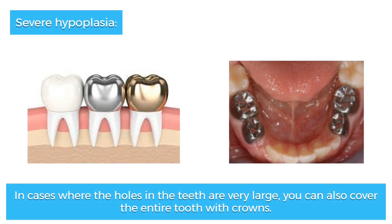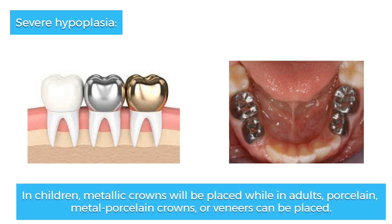For severe hypoplasia, in cases where the holes in the teeth are very large, you can cover the entire tooth with crowns. In children, metallic crowns will be placed, while in adults, porcelain, metal porcelain crowns, or veneers can be placed.